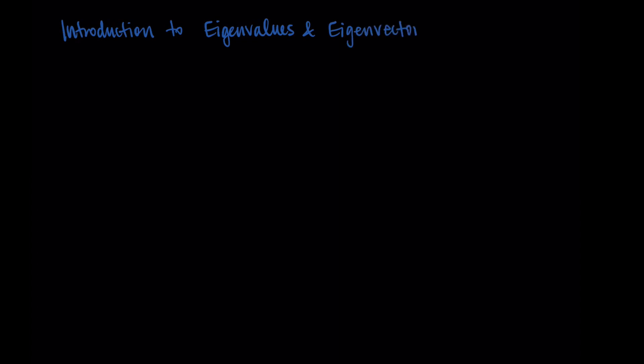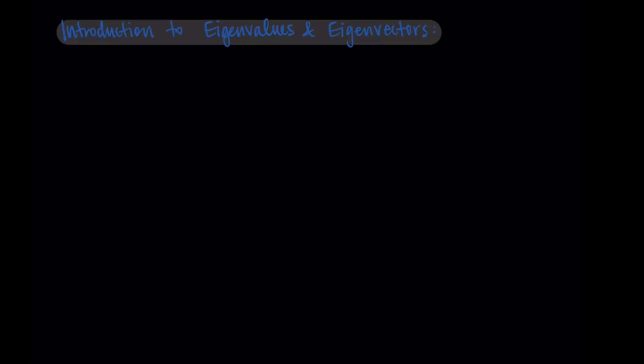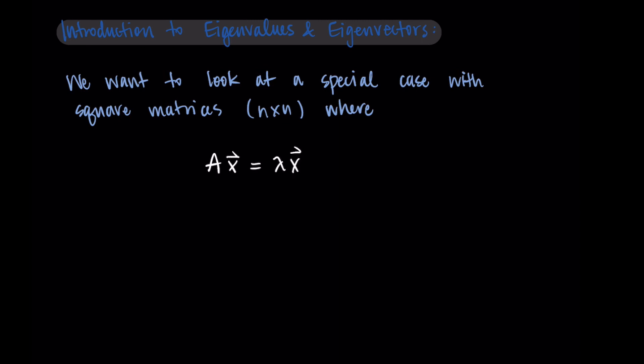Hi and welcome. In this video we are introducing the concepts of eigenvalues and eigenvectors. Our basic setup is that we want to look at a special case of square matrices, matrices that have dimensions n by n, where we have A times x equals lambda times x.